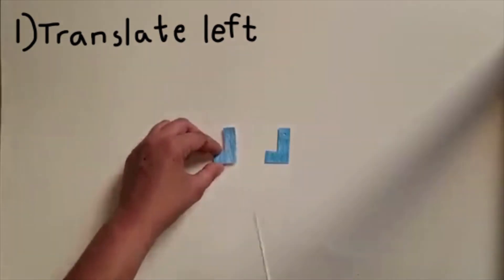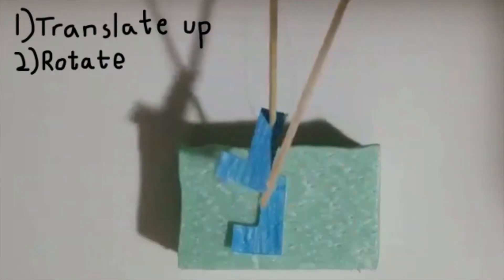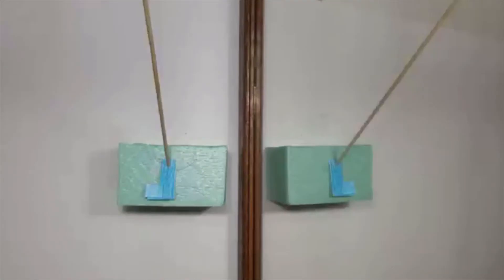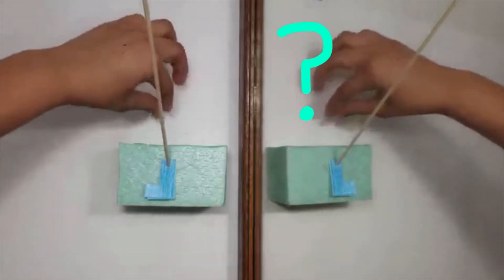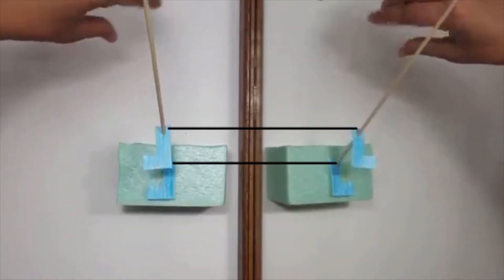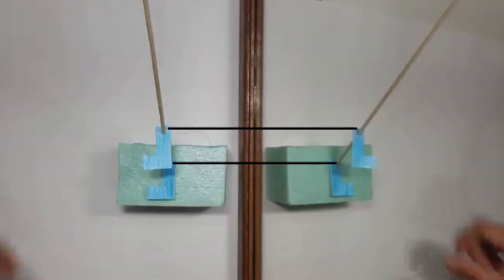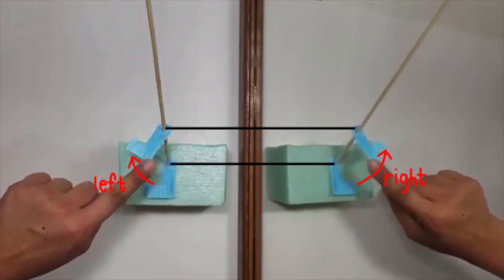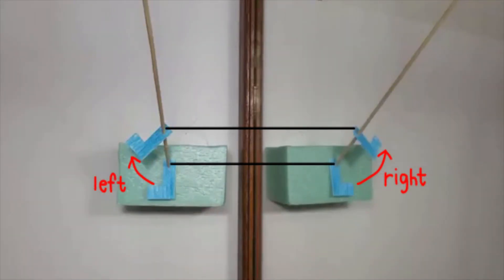Now, instead of translating a piece sideways, I'll bring it up and then rotate it. What effect does this have on the reflection? Now it looks like the reflection is moving up the same amount, but instead of rotating it to the left, it's rotating to the right in the opposite direction.